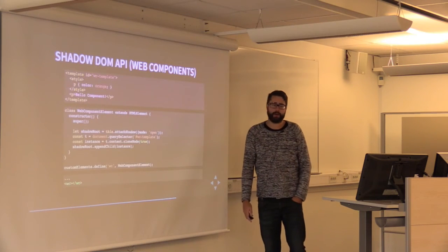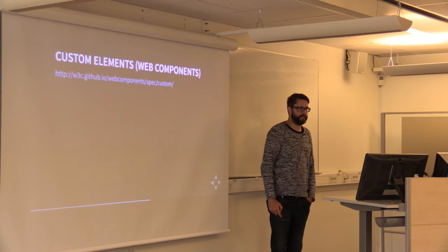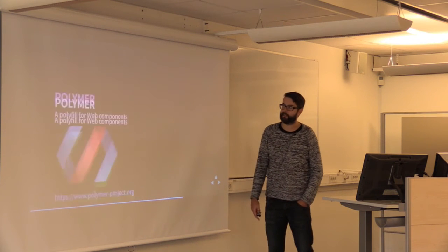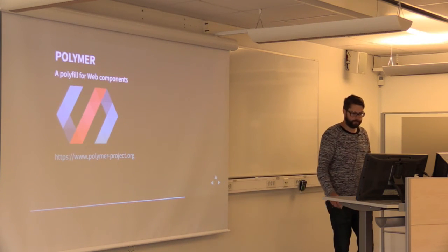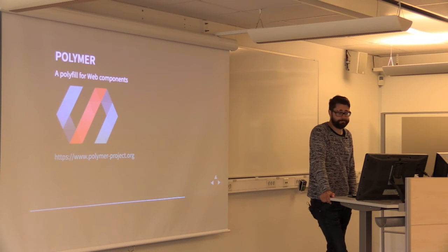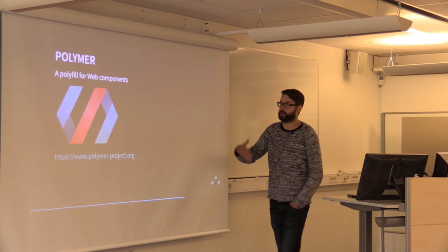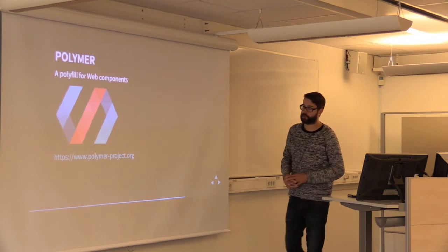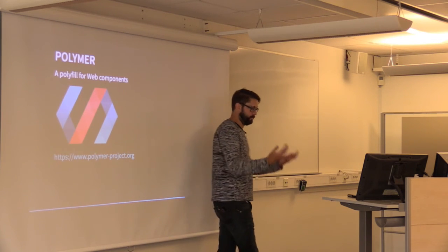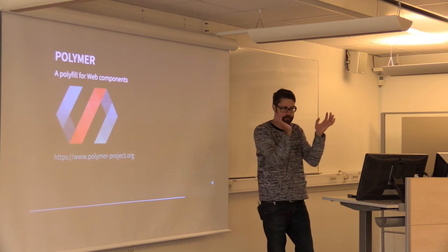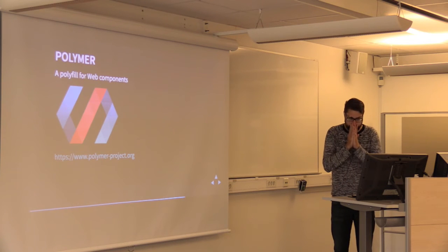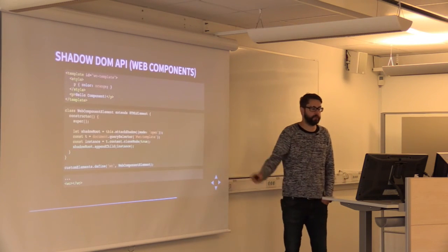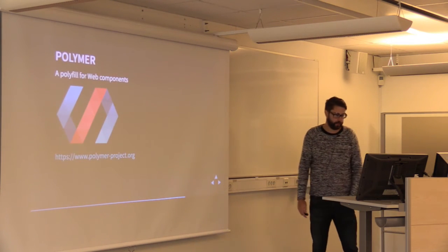Shadow DOM compliance is currently poor across browsers — you can probably make it work in Chrome, but not much more. However, Google has created the Polymer project, which brings web components to every browser. You write code using Polymer and it works across browsers; if native shadow DOM support is present it uses it, otherwise it encapsulates inside the regular DOM. If you want to experiment with web components right now, Polymer is the way to go, though native browser support is coming in the not-too-distant future.